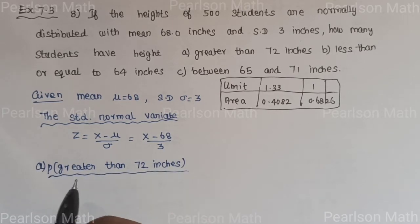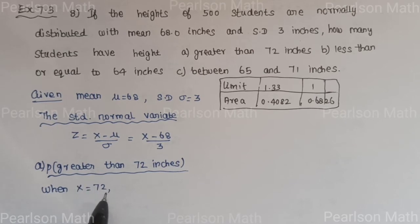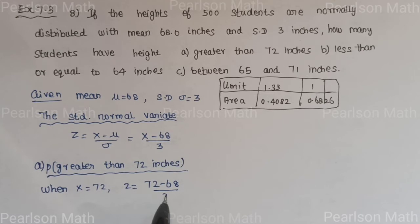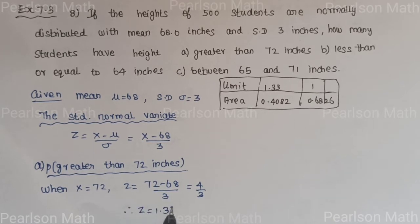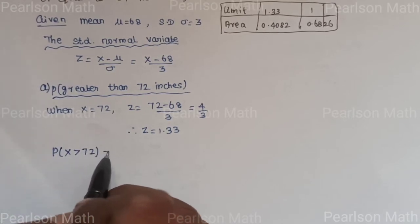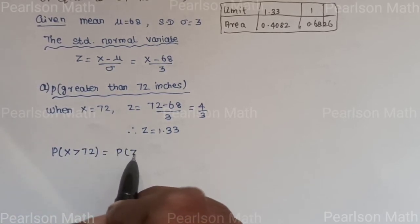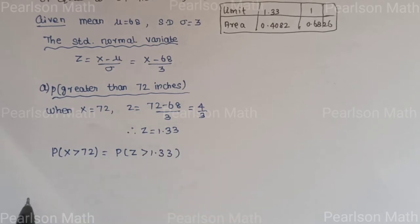First subdivision: P(X > 72). When X = 72, Z = (72 − 68) / 3 = 4/3 ≈ 1.33. So P(X > 72) = P(Z > 1.33).